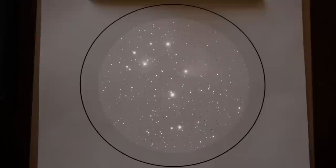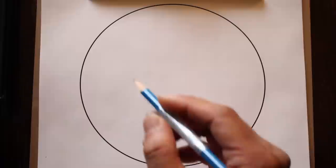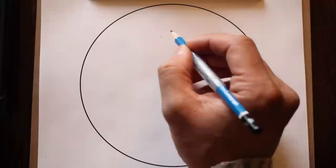Imagine the circle in four quarter slices and draw the stars within each slice. First, pay attention to the brightest stars and draw them.